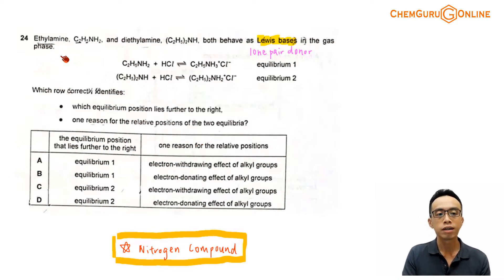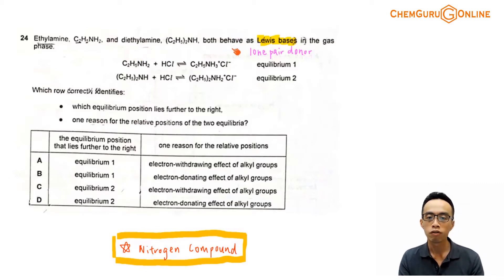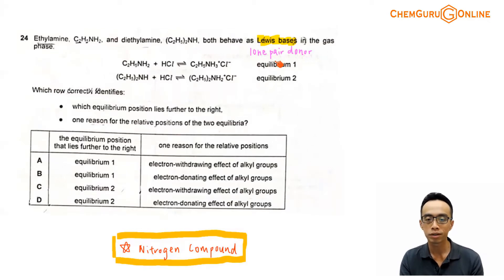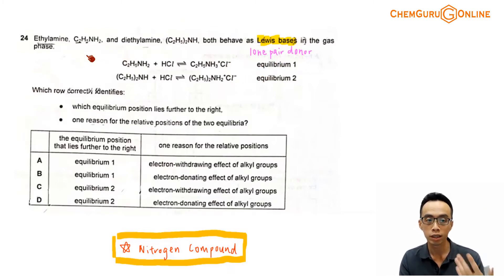Now question 24: etylamine, C2H5NH2, and diethylamine both behave as Lewis bases in the gas phase. Lewis bases are lone pair donors. So I have two equations here involving the reaction with HCl, and I have two equilibria — equilibrium 1 involving etylamine, equilibrium 2 involving diethylamine.